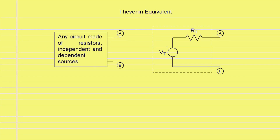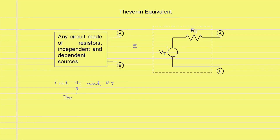Note that the circuit on the left can be very complicated and have many resistors and independent and dependent sources. However, it can be replaced by a very simple circuit, which consists of just one voltage source and one resistor. Normally, we will be given the circuit on the left and we will have to find the values of VT and RT for the circuit on the right. The voltage source value VT is called the Thevenin voltage and RT is called the Thevenin resistance.